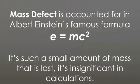Mass defect is accounted for in Albert Einstein's famous formula E equals mc squared. It's such a small amount of mass that is lost, it's almost insignificant in any calculations. So we say it's negligible mass.